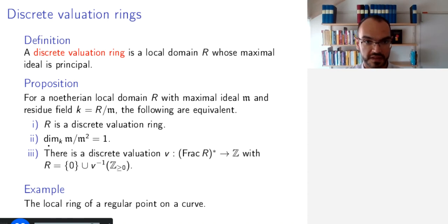This is clear from property 2, because the requirement for regularity or smoothness is that the dimension of this vector space is the dimension of the variety. And since the variety is a curve, the dimension is 1, so this is clear. The equivalence of these three conditions is left as an exercise.